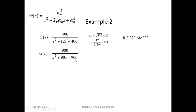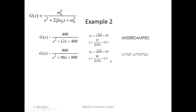The second example is when the transfer function G(s) equals 900 divided by s-squared plus 90s plus 900. The natural frequency is 30 and the damping ratio is 1.5. The system is over-damped because the damping ratio is greater than 1.